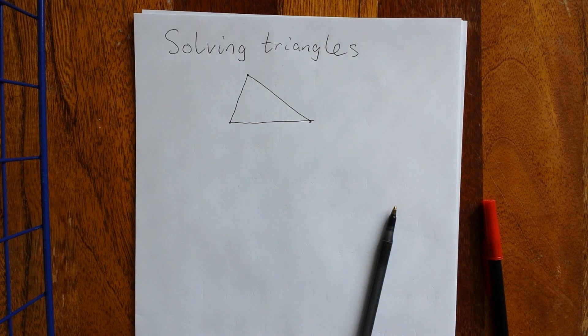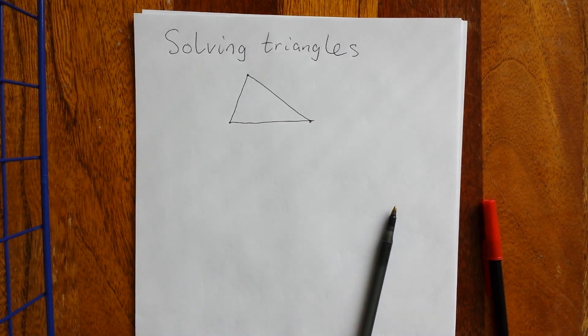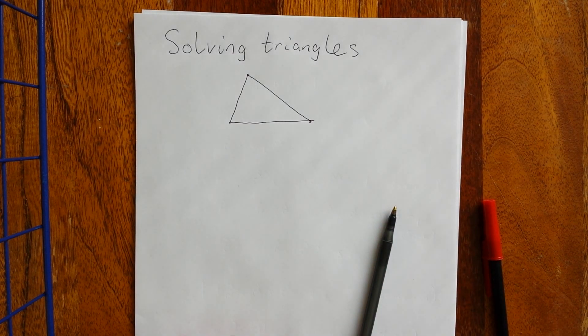This is a lecture intended for the end of a trigonometry course. What we have seen so far with triangles has been mostly right triangles, so today we're going to talk about any other generic triangle that looks like this.